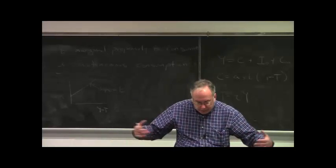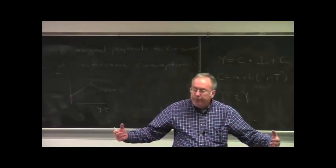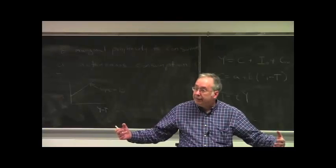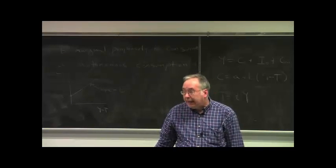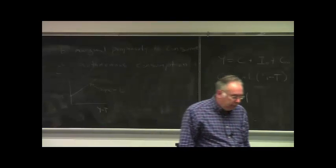For every extra dollar of income they have, they will spend this fraction B of it on consumption. Say if B were 0.8, then it would mean if national income went up by a dollar, consumption would go up by 80 cents.